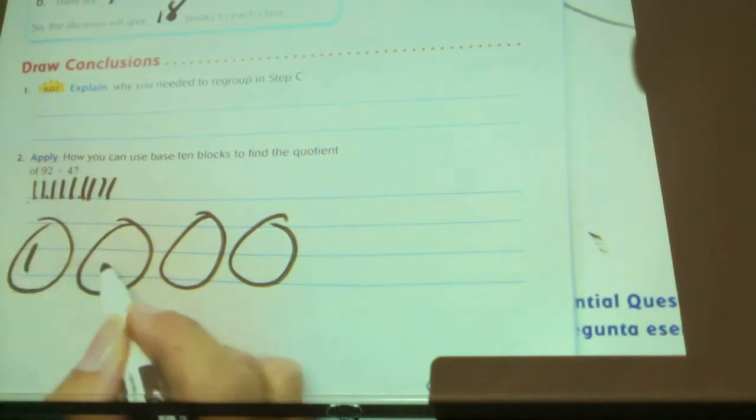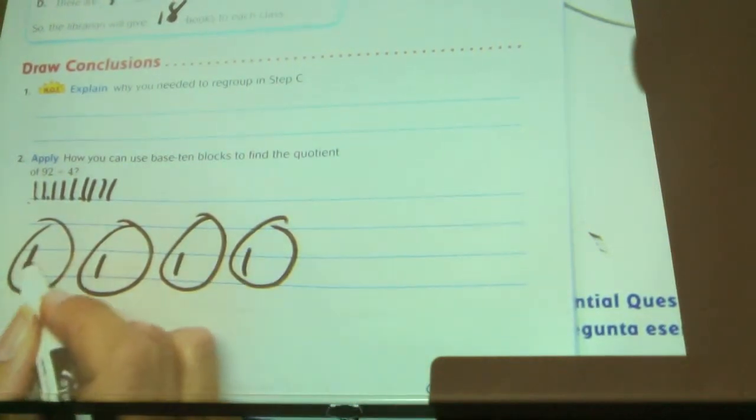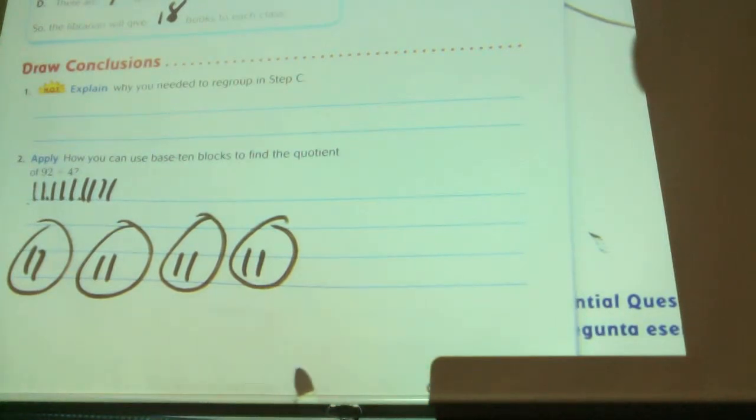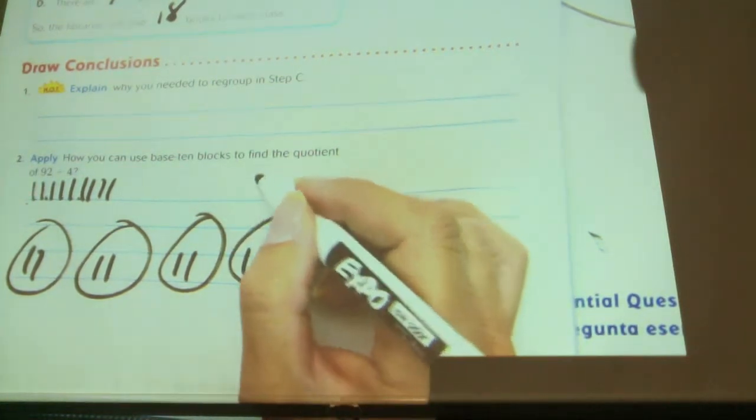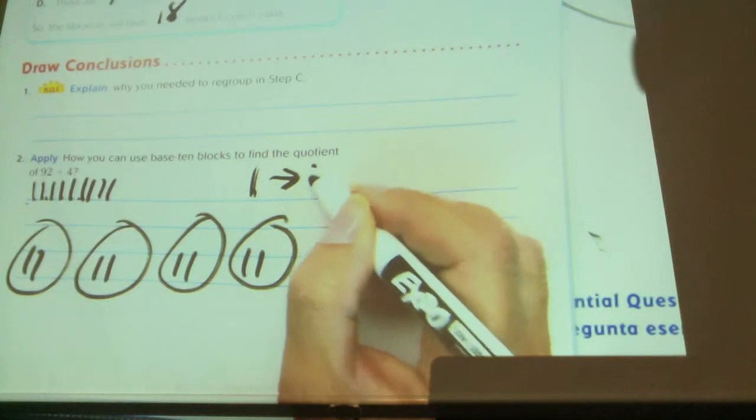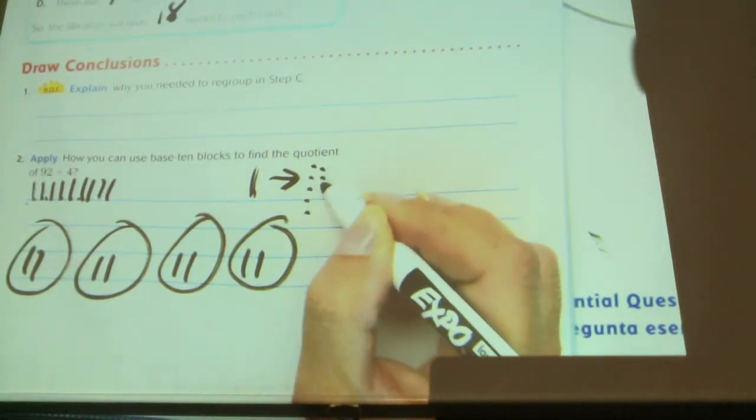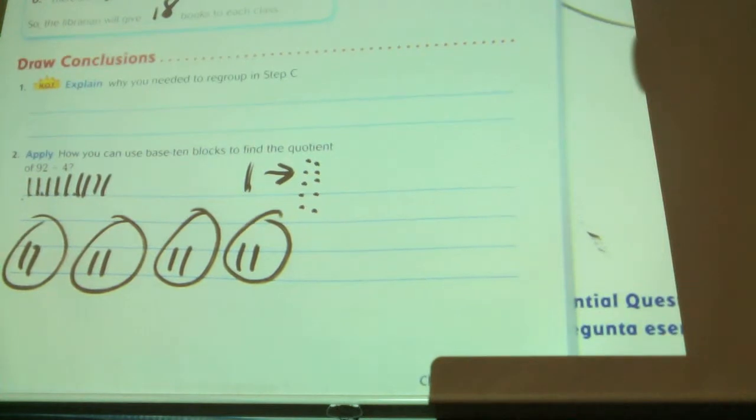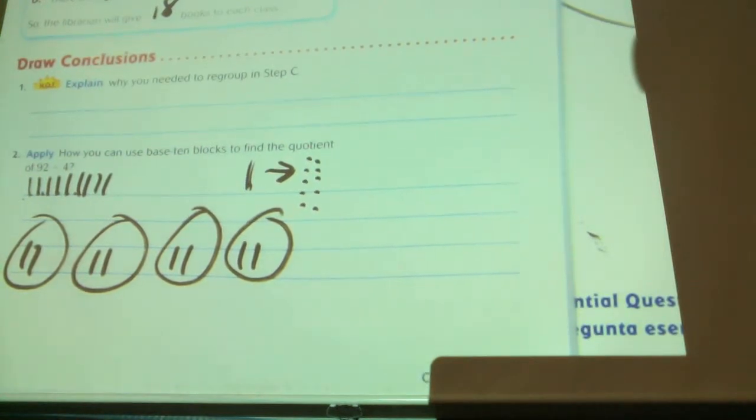And you put them in groups of four. Right? So here's one, two, three, four, five, six, seven, eight. How many sticks do I have left over? One. So I'm going to have to regroup one ten stick to be ten ones.